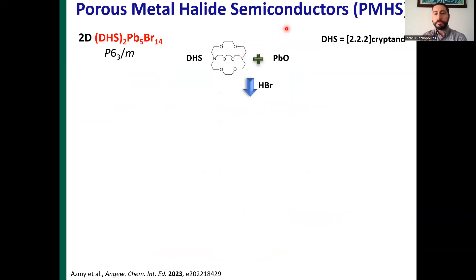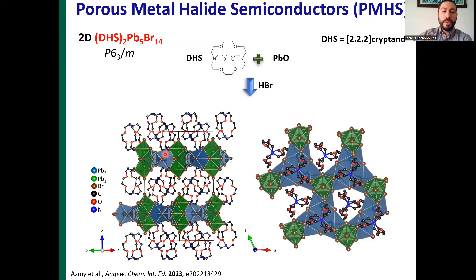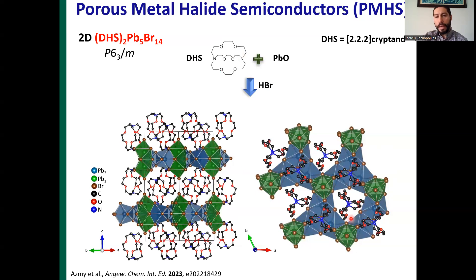We came up with a general strategy where we utilized molecular cages as both structure-directing agents and counter-cations. Reaction of the DHS-D2 cryptand with lead in acidic media gave rise to the first porous metal halide semiconductor. This is a 2D structure consisting of single inorganic layers of lead bromide clusters that are separated and charge-balanced by a single organic layer of molecular cages. The molecular cages are double proton-added, acting as counter-cations for the anionic inorganic framework. An out-of-plane projection showcases the hexagonal arrangement motif templated by the protruding inorganic cluster.